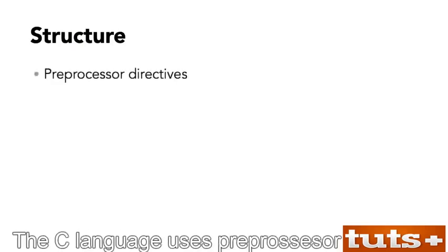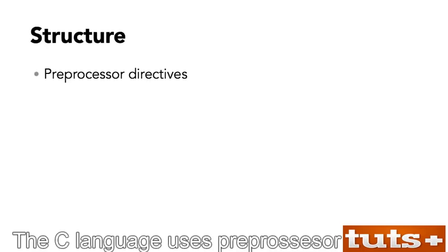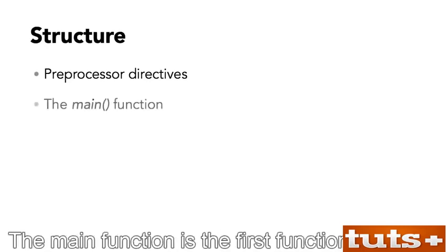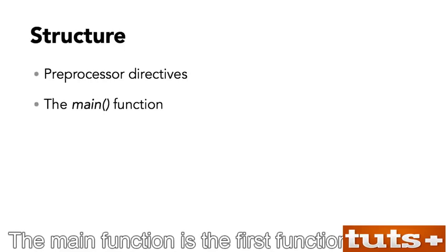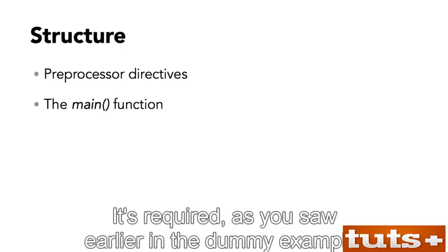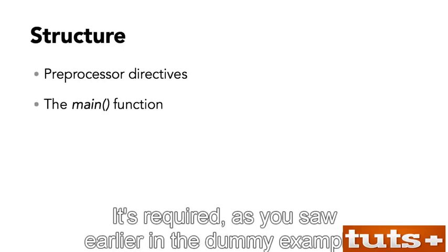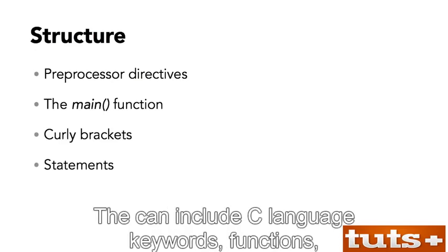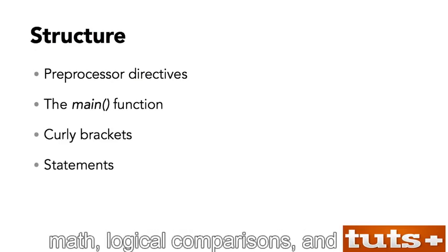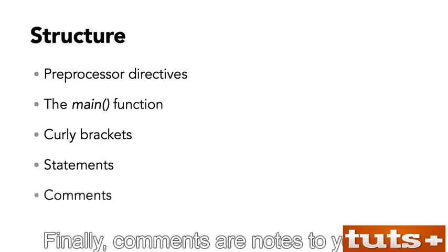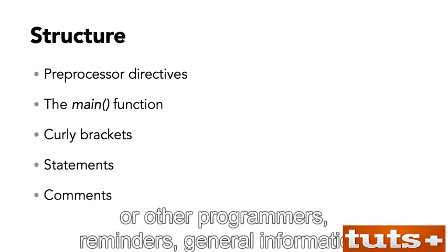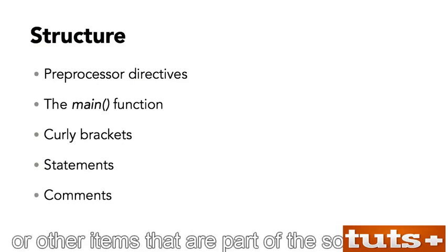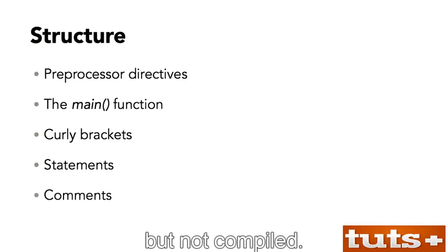The C language uses preprocessor directives to help control program flow. The main function is the first function executed in all C programs — it's required. Curly brackets enclose a function's contents. Statements are like sentences in C — they can include keywords, functions, math, logical comparisons, and so on. Finally, comments are notes to yourself or other programmers — reminders, general information, or other items that are part of the source code but not compiled.